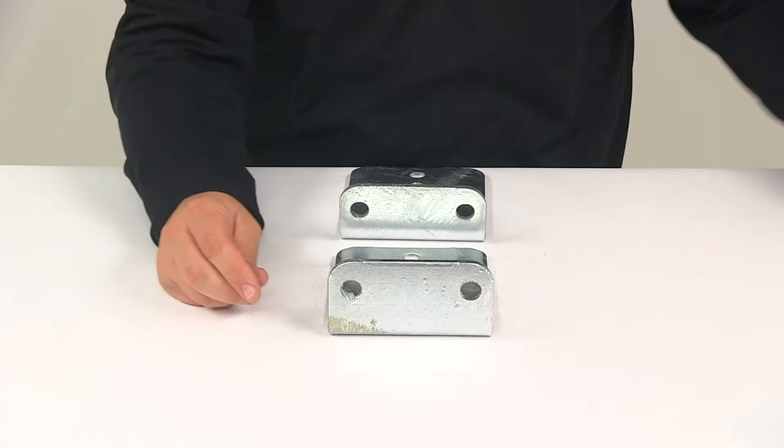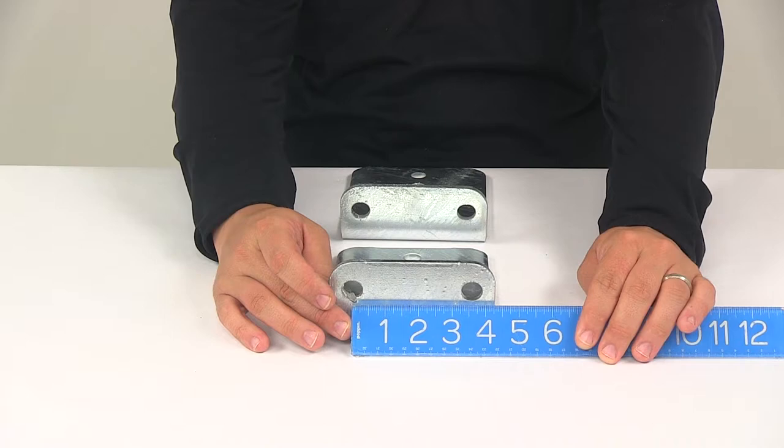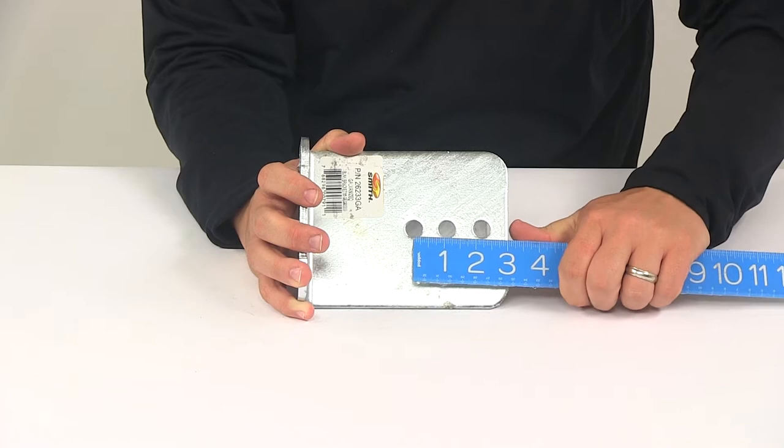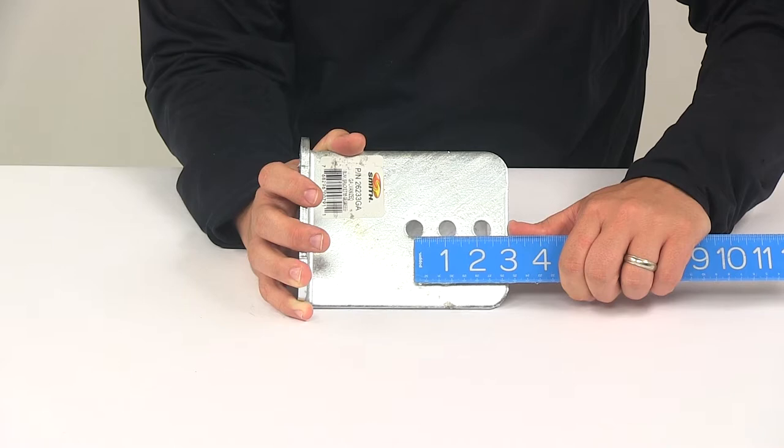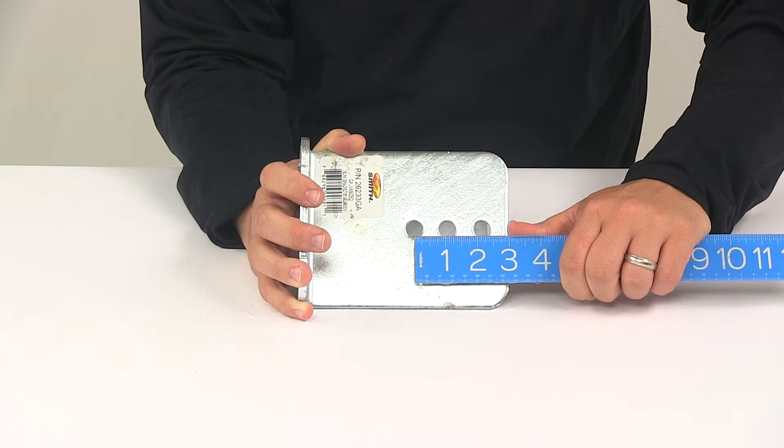Now when it comes to the distance between the mount holes, those are all the same, so I'll just do it on one bracket. The distance between the trailer mounting holes, that's going to be three and nine sixteenths of an inch on center. And then the distance between the bunk board mounting holes, those are separated on center by about one and one sixteenth of an inch to one and one eighth of an inch.